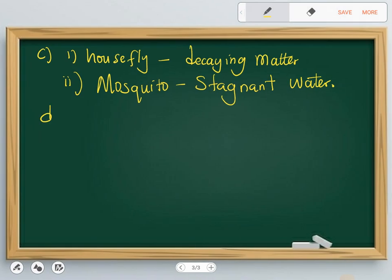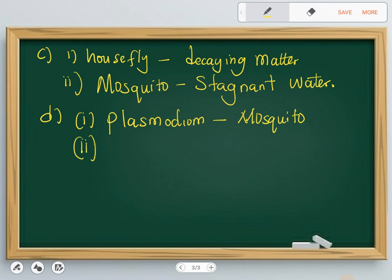So D one: for plasmodium, it is the mosquito. Mosquito carries this pathogen.